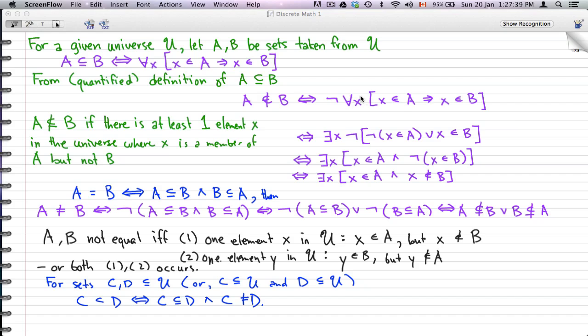So taking the negation of all x's, x belongs to A implies x belongs to B, we have that is logically equivalent to there exists an x, negated x belongs to A or x belongs to B. And if you work this all out, the real result that we want to find is there exists an x where x belongs to A and x does not belong to B. So in this case, there exists an element that appears in A but it does not appear in B, and in such cases A is not a subset of B.